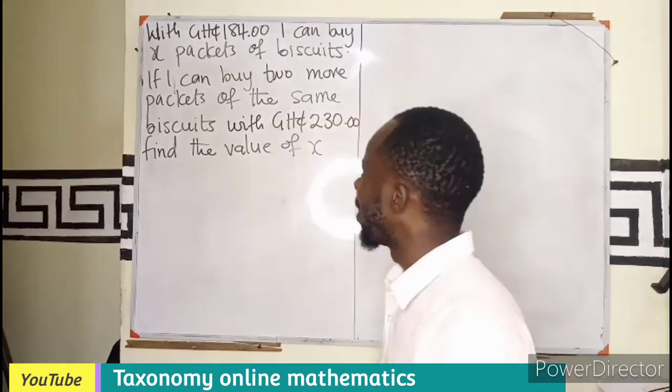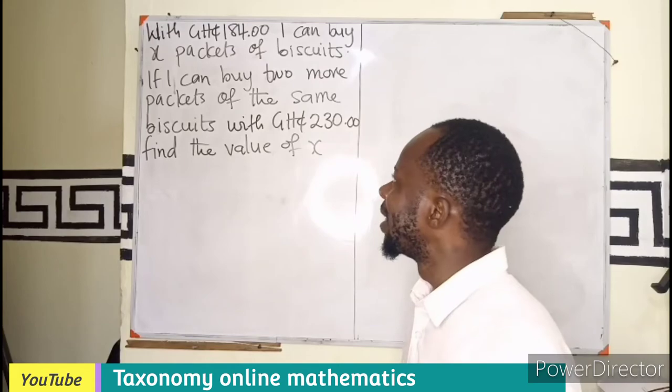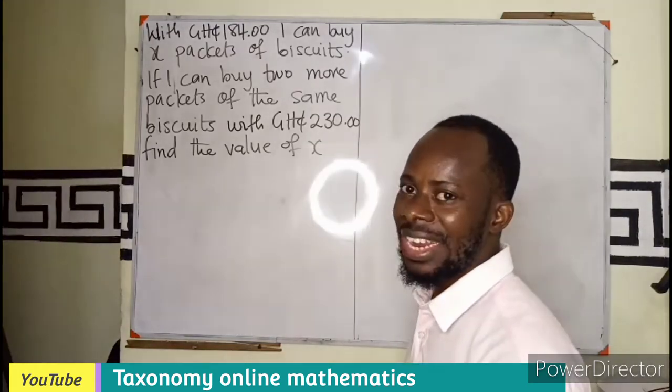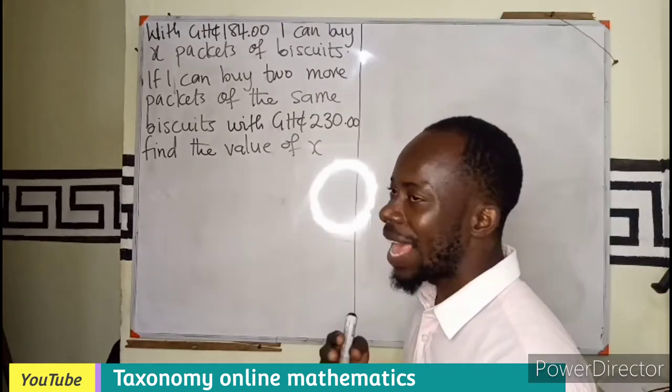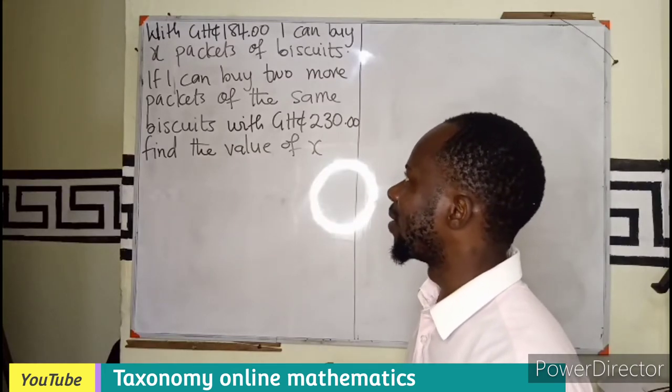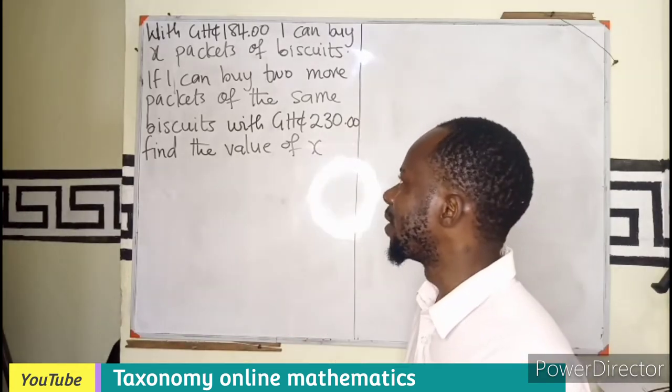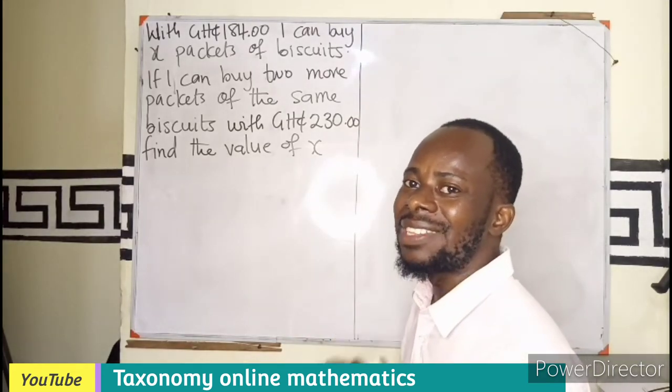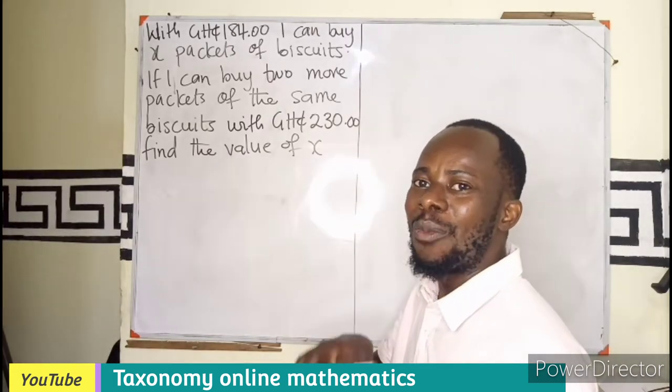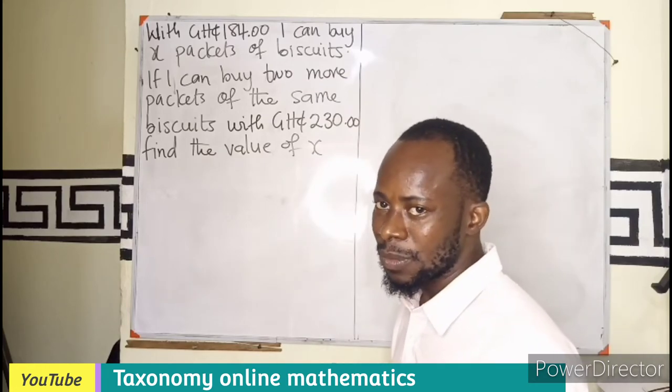We are taking a very simple question on word problem, which can also be a section A or section B question. So with 184 Ghana cedis, I can buy X packets of biscuits. If I can buy two more packets of the same biscuits with 230 Ghana cedis, then what is the value of X? Meaning, how many packets of biscuits did I buy with 184?